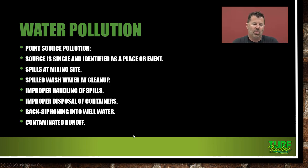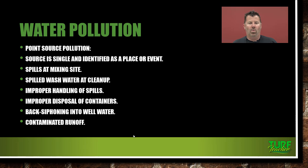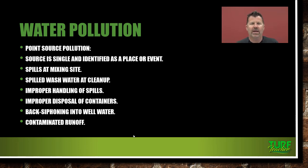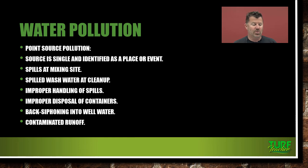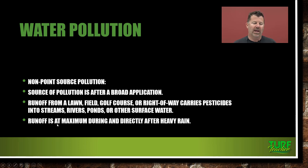Water pollution: we have point source pollution, which is a source that is single and identified — you know exactly where the contamination took place. For example, someone dumps a drum of Roundup near a water drain in the road and it runs down the curb and gutter into the storm drain — that is a single identified spot. Other examples include spills at a mixing site, spilled wash water at a cleanup, improper handling of spills, improper disposal of containers, back-siphoning into well water. These are very dangerous situations — just know that you can identify exactly where it happens.